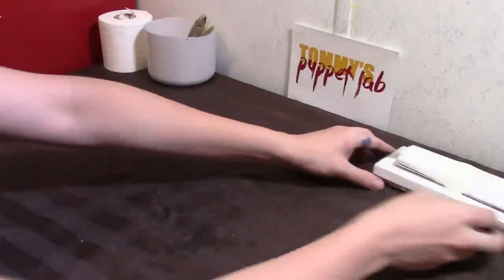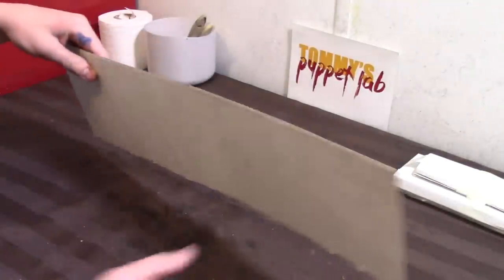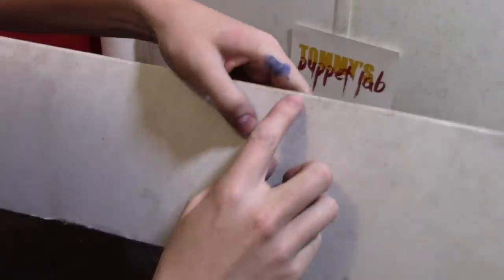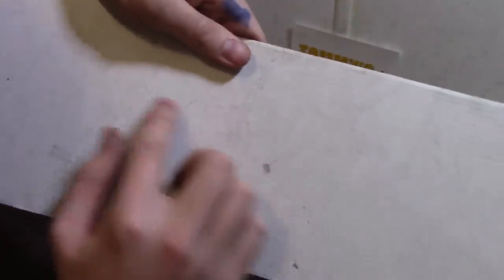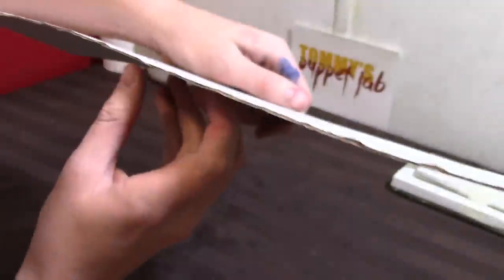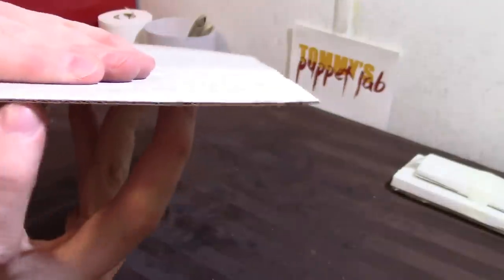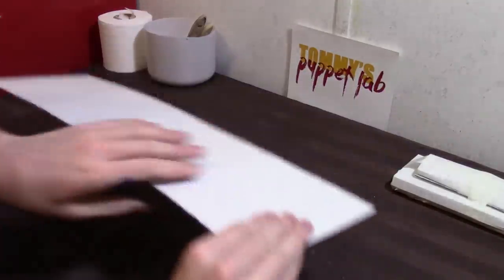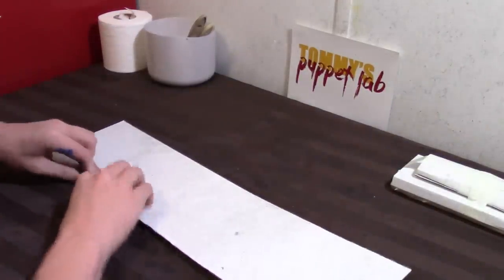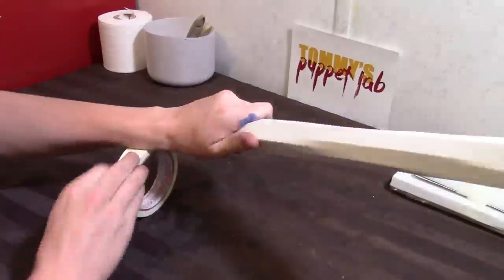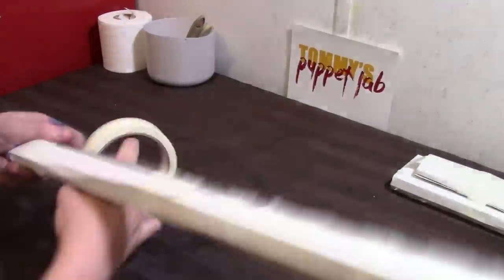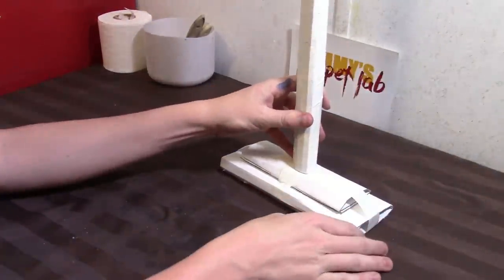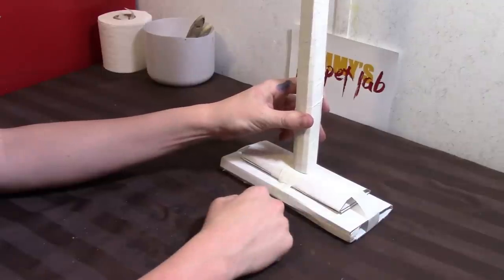Now we need to make the handle. We're going to take another sheet of cardboard. And when you're rolling this, if you see the lines on the cardboard here, this is the corrugation. You want to roll with it, not against it. We're going to roll this into a tube. And that's your handle once we glue it onto here. There we go. That's starting to look like a broom already.